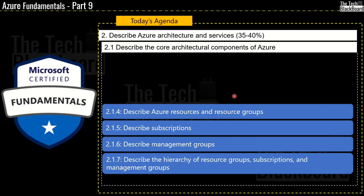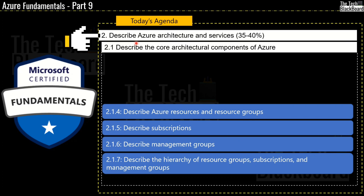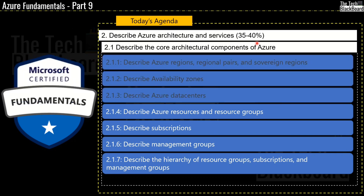These subsections are under the major section 2 which is 'Describe Azure Architecture and Services' — a very important section from the exam perspective as it alone commands 35 to 40 percent of the total exam questions. In the previous part 8, we already covered section 2.1.1 where we learned about Azure regions, regional pairs, and sovereign regions. We also learned about Azure availability zones and Azure data centers in sections 2.1.2 and 2.1.3 respectively.